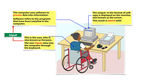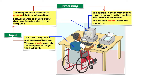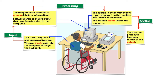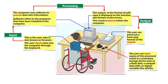The output in the format of soft copies is displayed on the monitor, also known as the screen, and this result is stored within the computer. The user can print out a hard copy format of the output. The user can also store copies of the processed results in a secondary storage device such as a flash disk, a compact disk, or digital versatile disk.